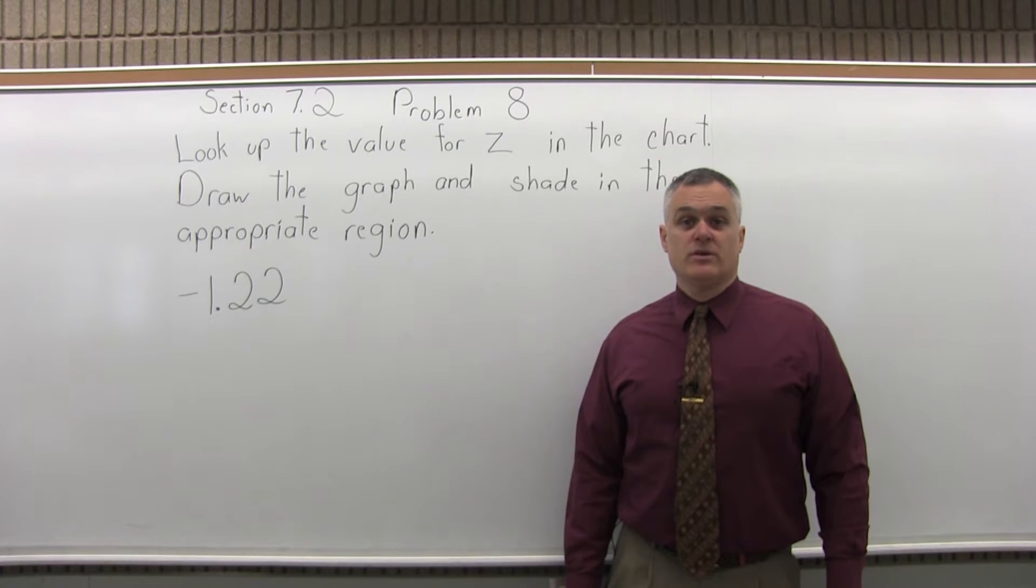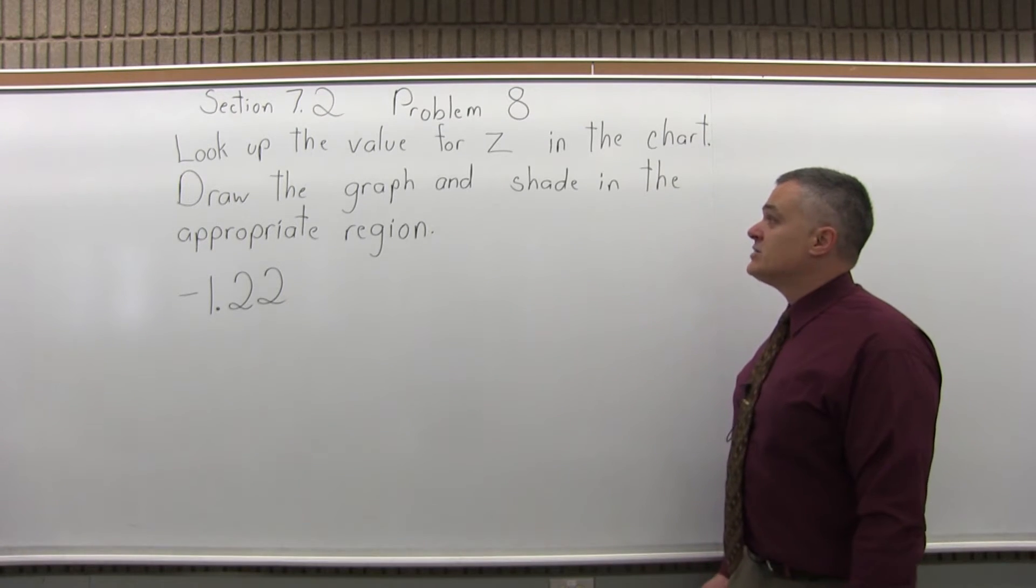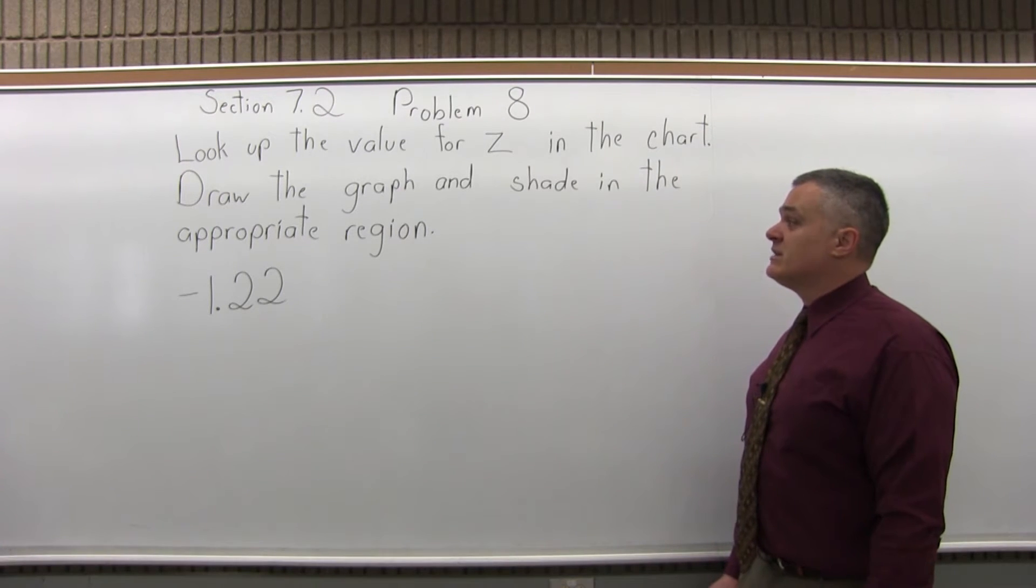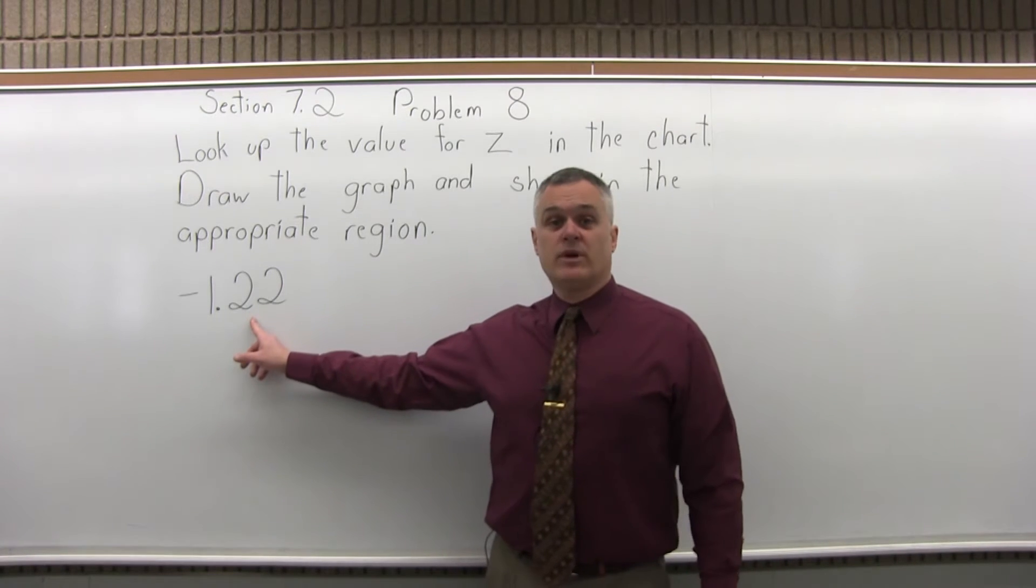This is Section 7.2, Problem 8. It says look up the value for z in the chart and draw the graph and shade in the appropriate region. And the value to look up is negative 1.22.